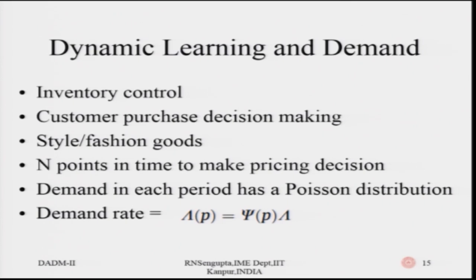Here we had actual probabilities. But in a large number of cases, we do not have those precise numbers for these probability distributions. So what we next look into is something known as the dynamic learning demand model, which is very widely used in inventory control, in supply chain management, and also in understanding customers for purchasing decision making. For example, in the case of style or fashion goods, where demand is extremely uncertain, we use dynamic learning to launch newer versions of fashion goods.